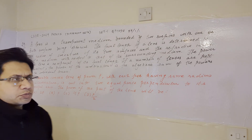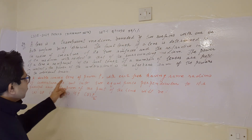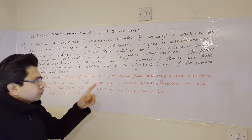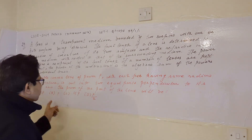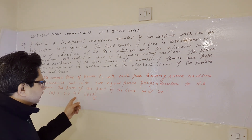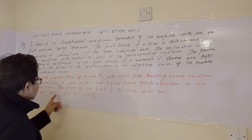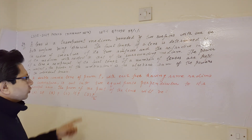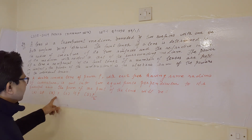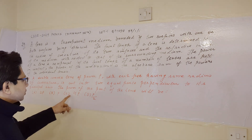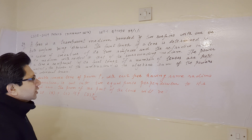The second question based on this paragraph is: a double convex lens of power P, with each face having the same radius of curvature, is cut into two equal parts perpendicular to its principal axis. The power of one part of the lens will be — option A: 2P, option B: P, option C: 4P, and option D: P/2.